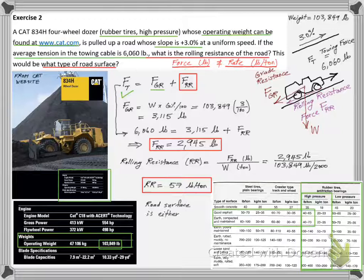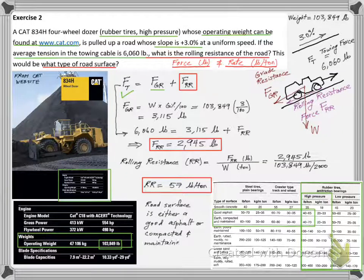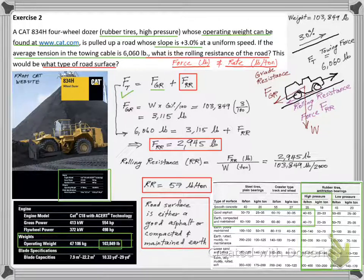We can match the RR calculated and given values and could conclude that the road is either good asphalt or compacted minted earth.